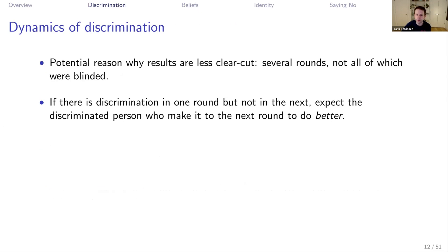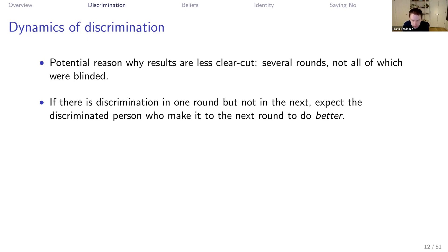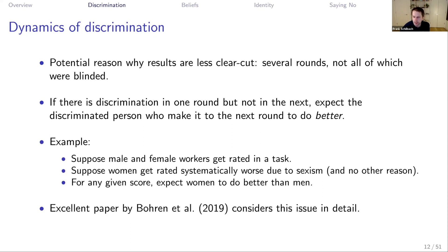Why are these results not entirely clear-cut? In later rounds, the number of observations gets small. But there's another reason: if there's discrimination in one round but not the next, the women who make it to the next round are selected — only the best women will have survived the earlier discriminatory screening. This means comparisons in later rounds are potentially biased because you're comparing different types of people across rounds, which can make the results less clear-cut overall.